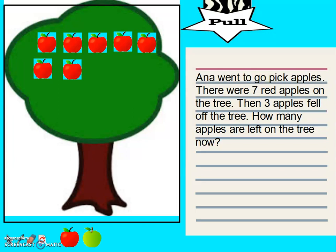Anna went to go pick apples. There were seven red apples on the tree. Then three apples fell off the tree. How many apples are left on the tree now?